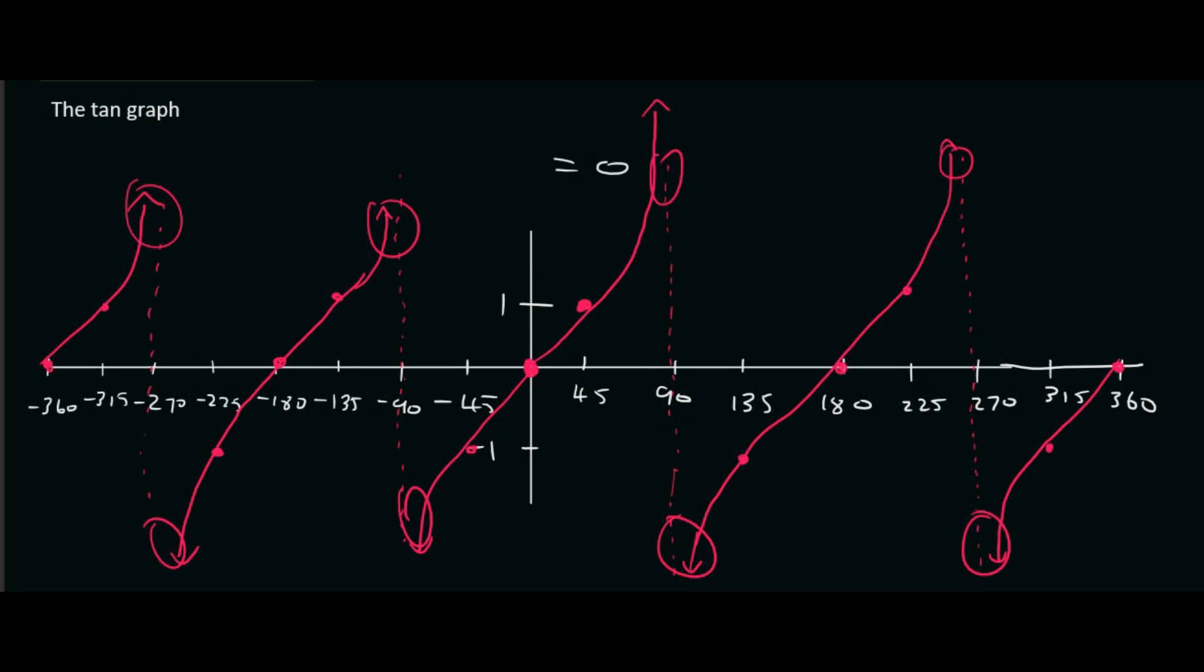Now we need to talk about amplitude, period, all of that stuff. So the period. Now remember for sin and cos I said that you should memorize 360. Well for tan you're also going to memorize but you're going to memorize 180.